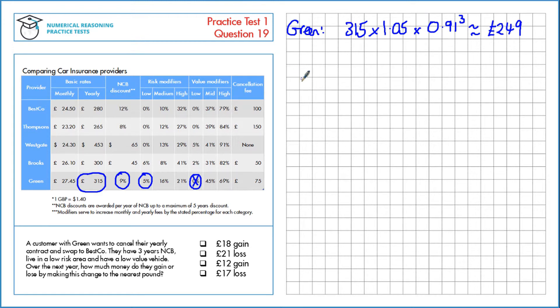Now let's look at the similar one but for Besco. So for Besco we have a yearly price of £280. There's a low value but that's 0% so we don't need to include it. Low risk and low value which are both 0% and a no claims bonus discount of 12%. So we get to decrease this by 12% which is 88% remaining for 3 years.